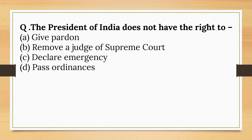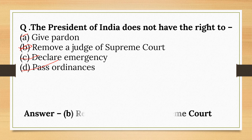The President of India does not have the right to do which of the following? The President has the power to give pardon. He cannot remove a judge of the Supreme Court — a Supreme Court judge can only be removed through the impeachment process of Parliament. The President can declare emergency and can pass ordinances during the recess of Parliament. So the correct option is Option B: Remove a judge of the Supreme Court.